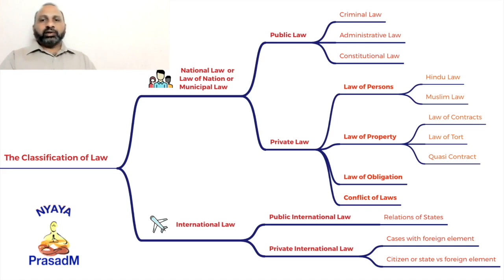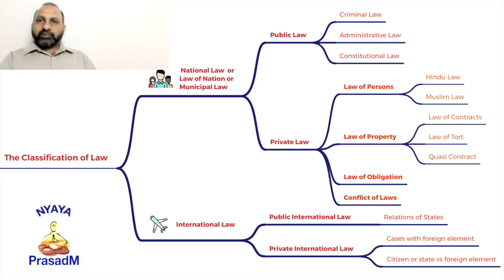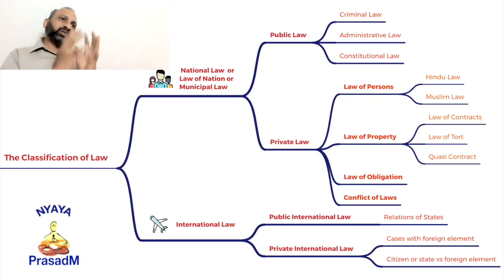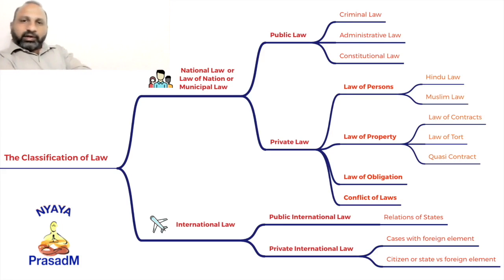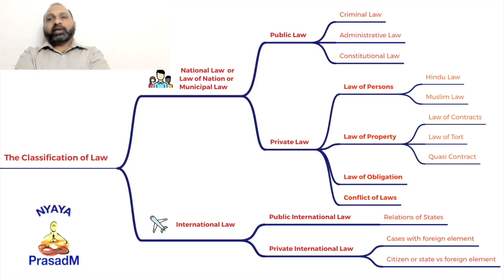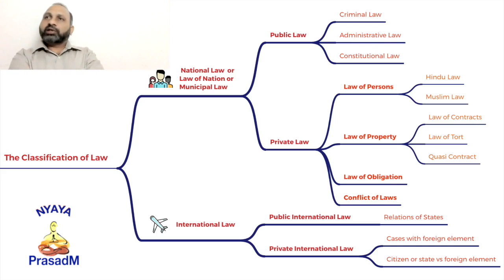We also have law of obligation and conflict laws, all dealt under private laws within the national law structure. Public law deals with criminal law, administrative law, and constitutional law — those concerned more with public interest than a specific person or group. Similarly, international law is subdivided into public and private: public international law deals with countries' relations and disputes, while private international law deals with cases having a foreign element versus citizens, states, territories, or other legal entities.